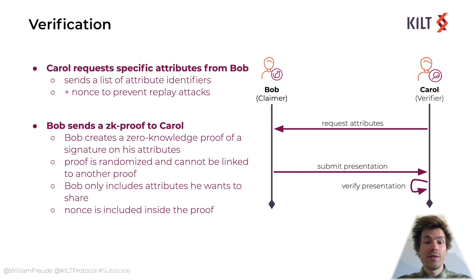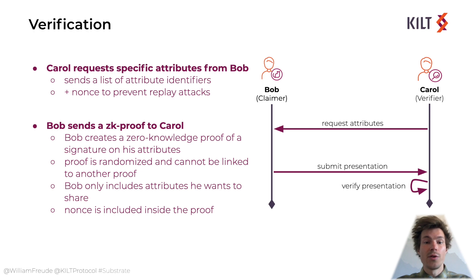When verifying, Carol checks three things. First, does the attester's public key match the credential signature? Second, has the credential been revoked? And third, was Carol's nonce really used to create the proof? If everything checks out, the proof is verified.